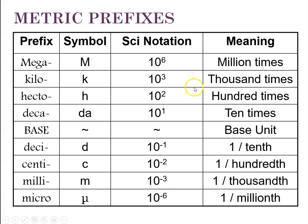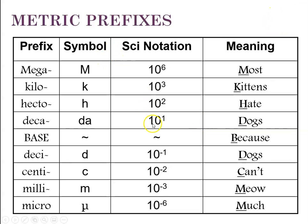There is a system of metric prefixes that we have to learn. If the base unit is the meter, a decameter is 10 meters, a hectometer is 100, kilo is 1,000, mega is a million. On the smaller side, a decimeter is a tenth of a meter, centi is a hundredth, milli is a thousandth, and micro is a millionth. A saying to help remember: 'Most kittens hate dogs because dogs can't meow much,' where M=mega, K=kilo, H=hecto, D=deca, base, D=deci, C=centi, M=milli, M=micro.